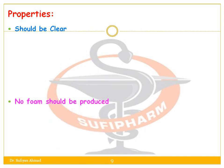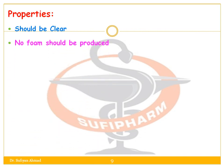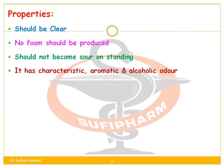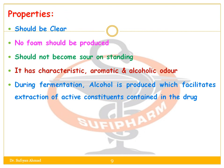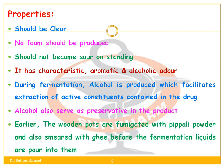The properties of Asava and Arista: they should be clear, no foam should be produced, and they should not become sour on standing. They have a characteristic aromatic and alcoholic odour. During fermentation, alcohol is produced which facilitates extraction of active constituents contained in the drug. Alcohol also serves as a preservative in the product. Earlier, wooden pots were fumigated with Pippali powder and also smeared with ghee before the fermentation liquids were poured into them.